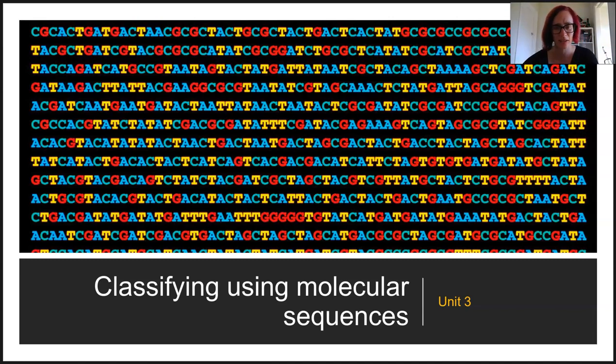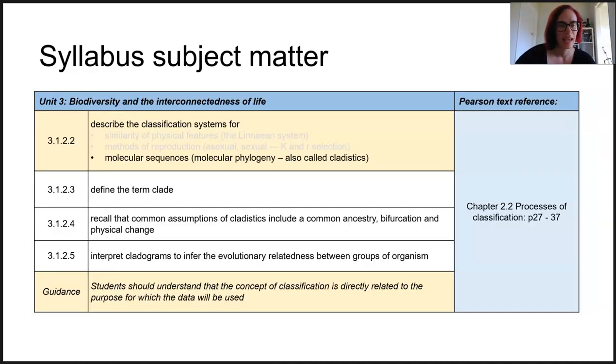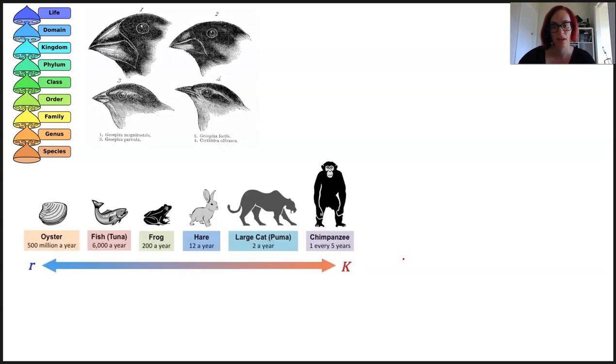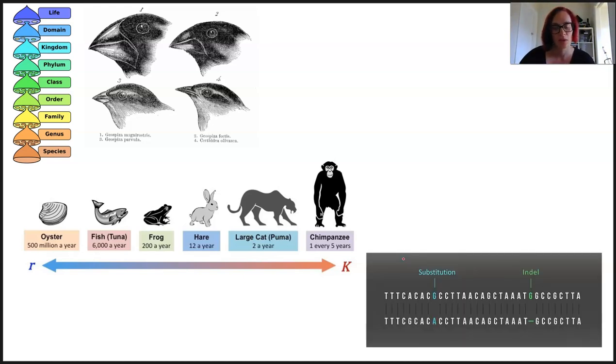In this lesson we are looking at classifying using molecular sequences. We're really only covering this particular dot point in this lesson but we are going to link them in with all of these dot points soon. So far we've classified living things using physical features with the Linnaean classification system and via their reproductive methods considering the K and R selected species. Our final method by which we classify organisms is through molecular sequences.